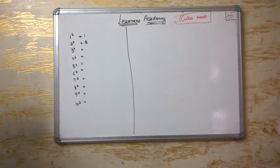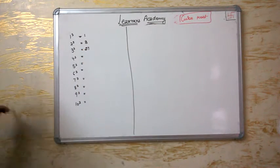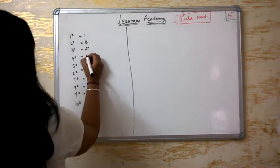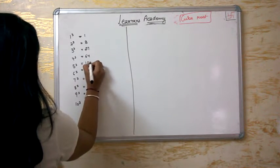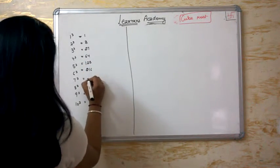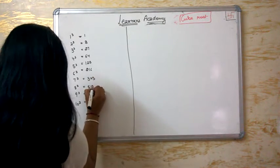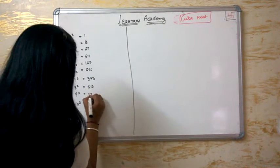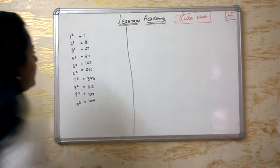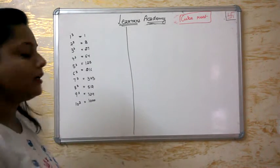The cube values are: 1 cubed = 1, 2 cubed = 8, 3 cubed = 27, 4 cubed = 64, 5 cubed = 125, 6 cubed = 216, 7 cubed = 343, 8 cubed = 512, 9 cubed = 729, and 10 cubed = 1000.